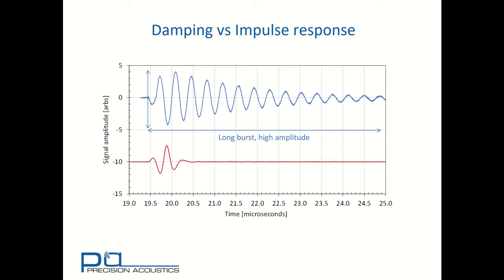In contrast, the highly damped transducer rings down very rapidly. It's a much shorter pulse but has much lower amplitude.